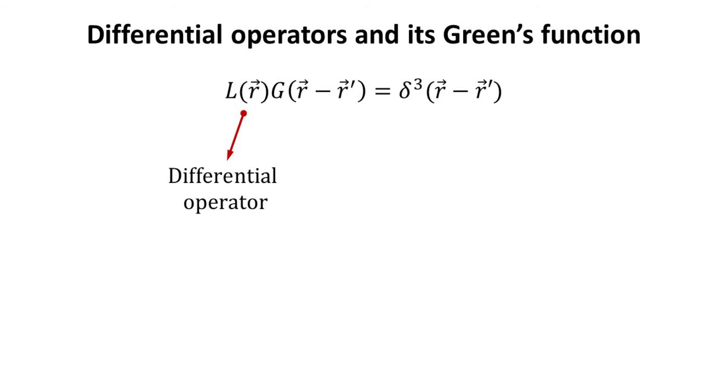Given a linear differential operator in R here and denoted by L, there exists a function which when operated on yields the Dirac-Delta function. We call this the Green's function of L.